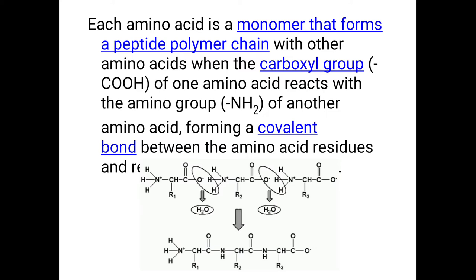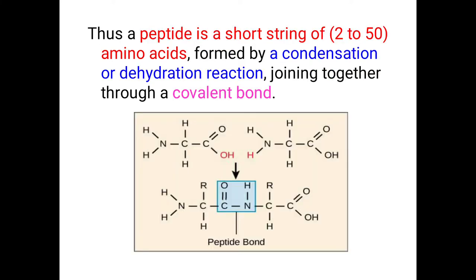During peptide link formation, water molecules are expelled out — this process where water is released during the formation of peptide linkage is called dehydration. Water molecules are released and peptide linkage is created between the amino acids. A peptide is a chain of amino acids joined by covalent peptide linkages through the dehydration process.